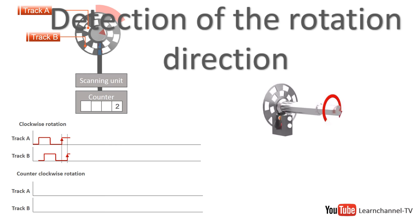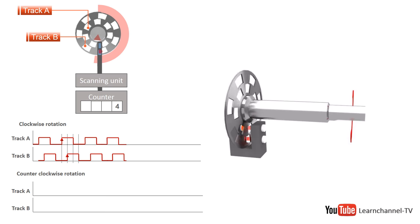To detect the rotational sense, the encoder needs two tracks. The sense of rotation determines which signal coming from track A or track B is leading.